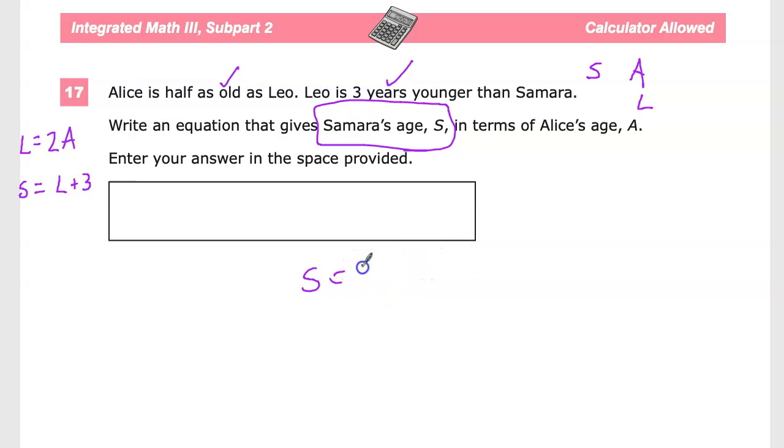This is what I'm looking for, but I know that this is true, so I'm going to substitute this L value for 2A, and I'm left with my final answer. So, if I want to find Samara's age, and I know what Alice's age is, I'll multiply Alice's age by 2, add 3, and that gives me Samara's age.